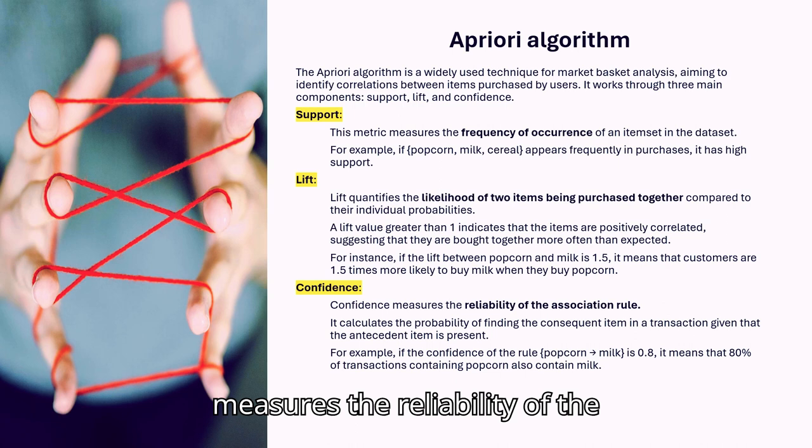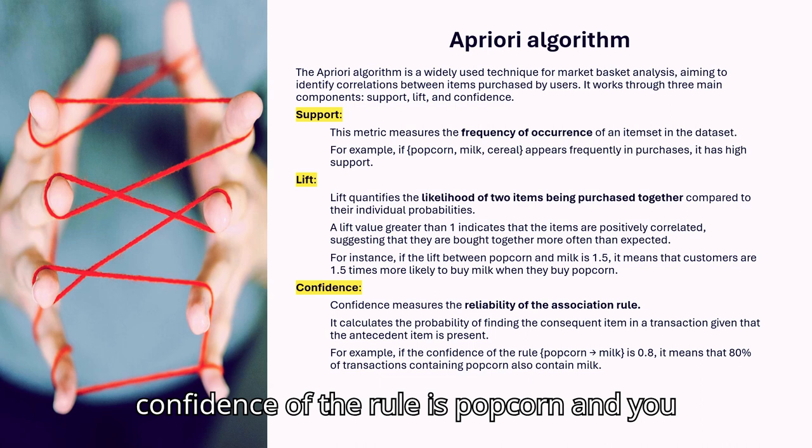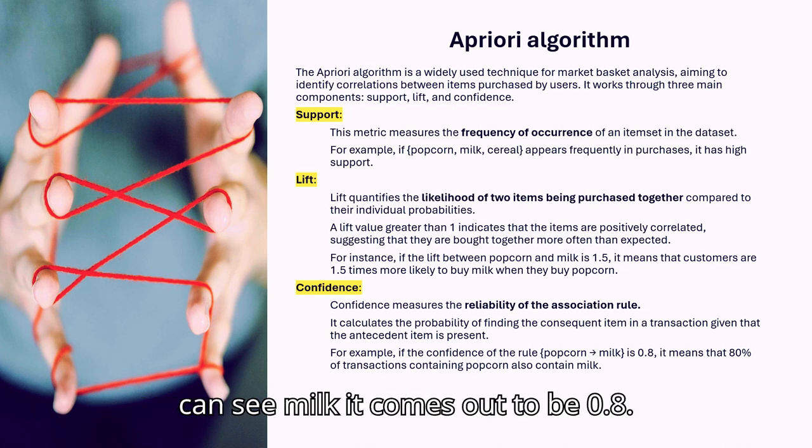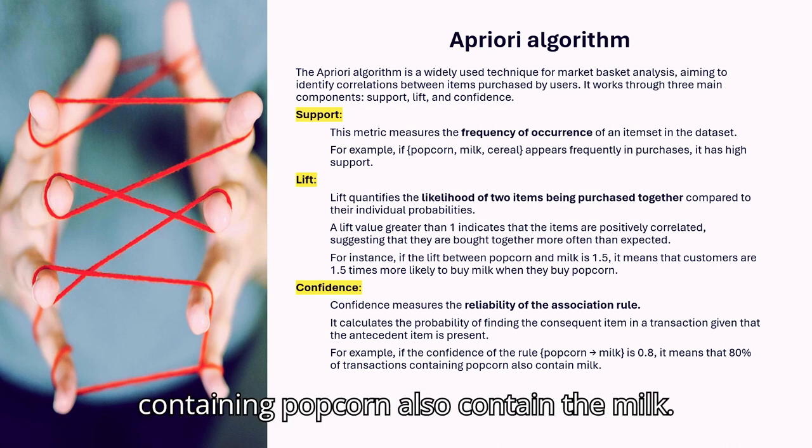Then comes the confidence. It measures the reliability of the association rule. It calculates the probability of finding the consequent item in the transaction. So if the confidence of the rule popcorn to milk comes out to be 0.8, that means 80% of the transactions containing popcorn also contain milk.